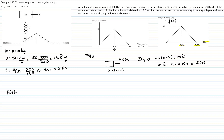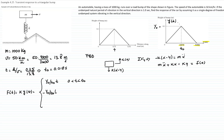We write y as a piecewise function. The first piece is a ramp: y = (y₀/t₀)·t, valid for 0 < t < t₀ = 0.018 s. The second piece is a negative ramp with the same slope but a y-intercept of 2y₀, valid for t₀ < t < 2t₀. The third piece is y = 0, valid for t > 2t₀.